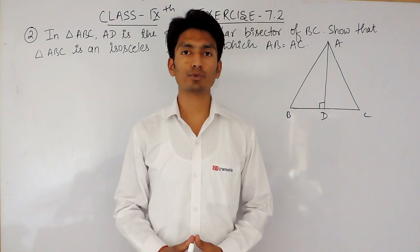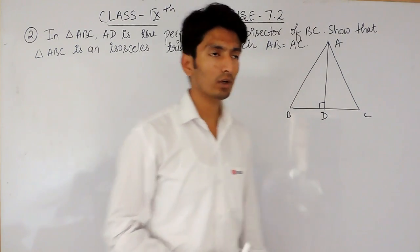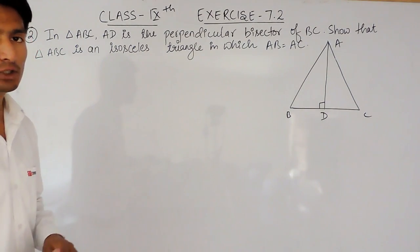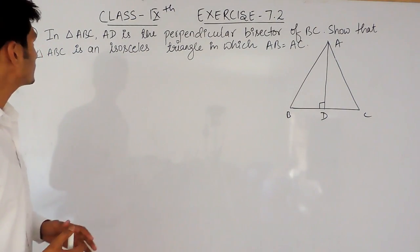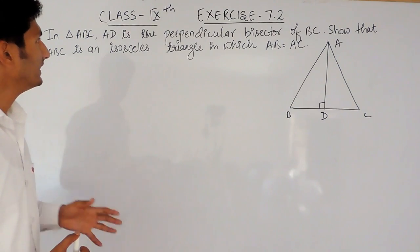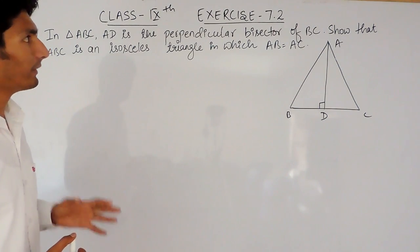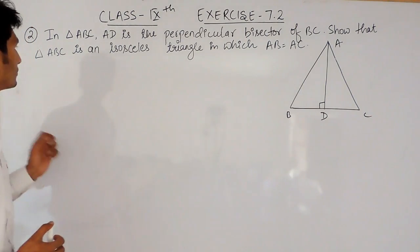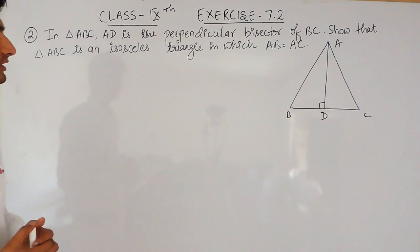Hello everyone, we are from TrueMaths and in this video we are going to solve question number 2 of exercise 7.2. And the question says, in triangle ABC, AD is the perpendicular bisector of BC. You have to show that triangle ABC is an isosceles triangle in which AB equals AC.